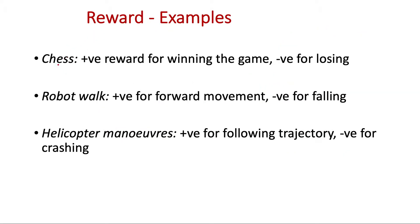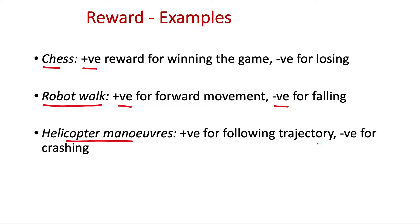Let's see some examples of reward. In the case of chess, we can define a positive reward for winning the game and a negative reward for losing. Here, individual moves don't receive any reward — the reward is delayed and we may get it at the end of the game. A second example is making a robot learn to walk, where we give positive reward for forward movement and negative reward for falling. In the case of helicopter maneuvers, we give positive reward for following the desired trajectory and negative reward for crashing.